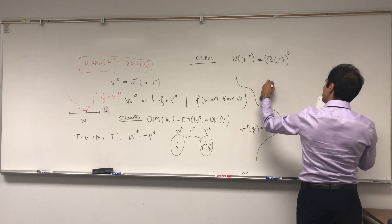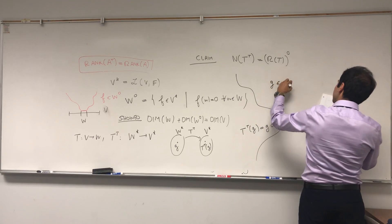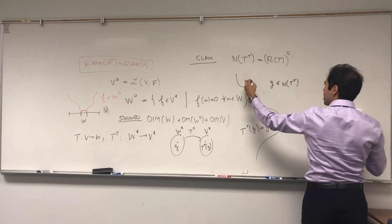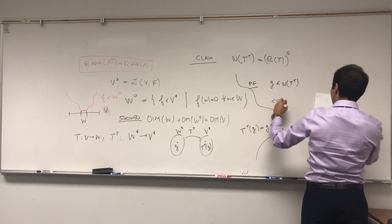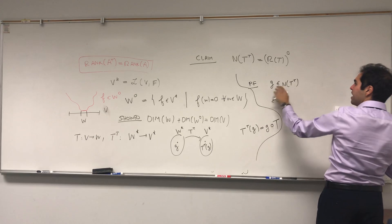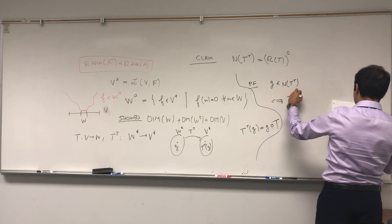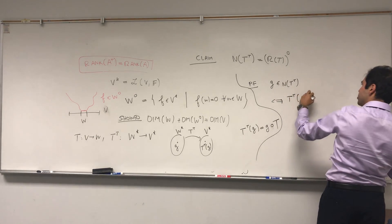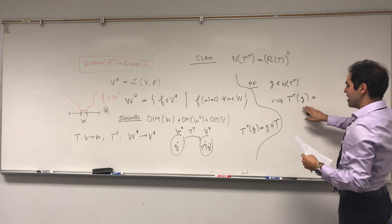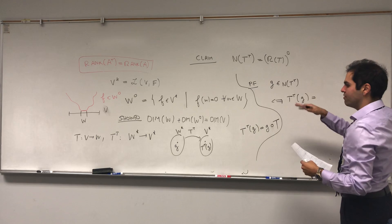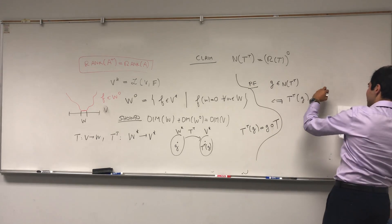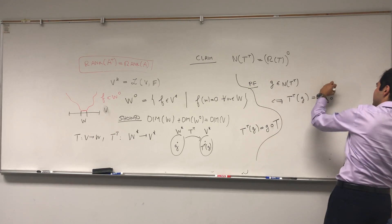So what does it mean for G to be in the null space of T transpose? So let me prove this. Well, that's true if and only if, if you apply T transpose to G, you get the zero vector. But what is the zero vector here? Well, T transpose G is a functional in V star. So it's the zero functional in V star.